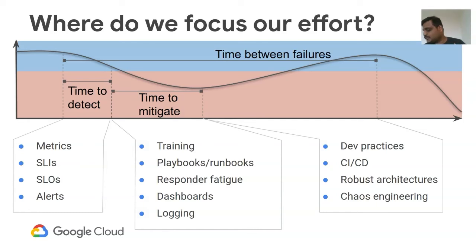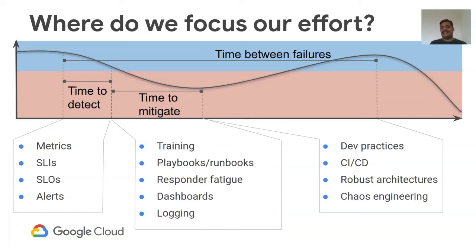We've talked about different stages of outages and what a postmortem is. Now — how do we focus our efforts? When you have a critical mass of postmortems, patterns start to emerge. You'll identify where there are frequent lapses and gaps. Then you can apply engineering tasks to fix those gaps. The list of actions isn't exhaustive, but it's a good representative set that has helped at Google to improve and reduce the impact and duration of incidents.